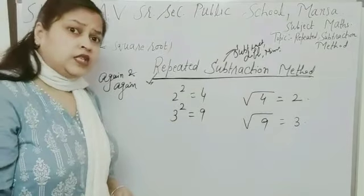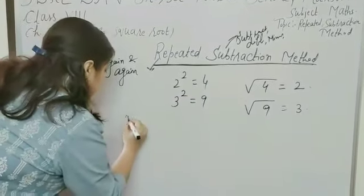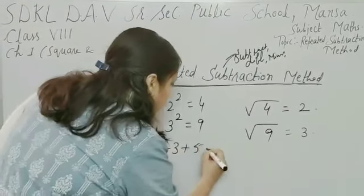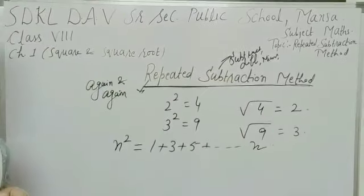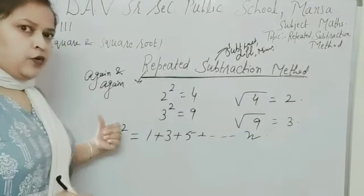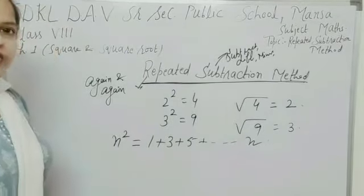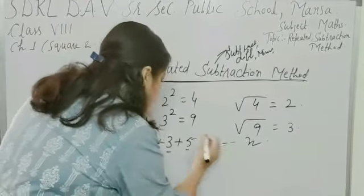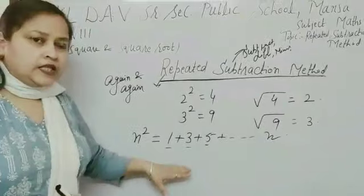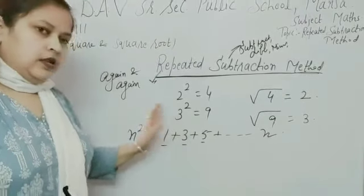Now, in my last video, we had discussed a property. The property is: square of a natural number n will be equal to sum of the first n odd natural numbers. Now, because square root is the inverse process of square, therefore, to find the square root by repeated subtraction method, we have to subtract these odd numbers from the given number, and we have to subtract till we obtain 0. And the number of steps will be the square root of that number.